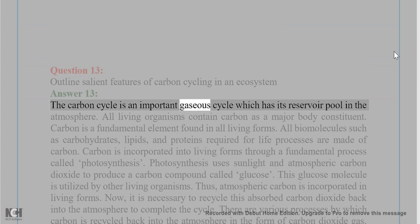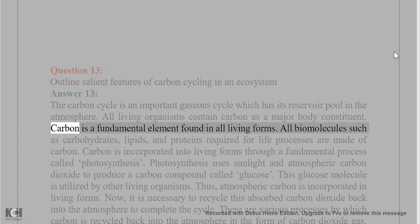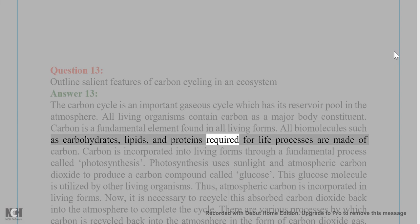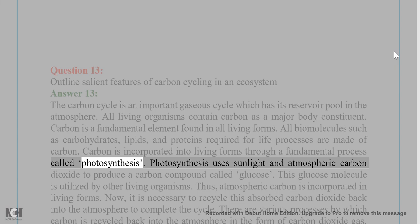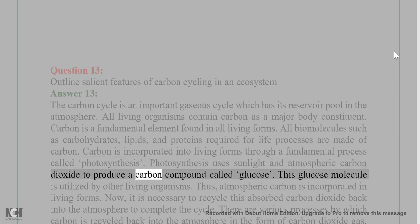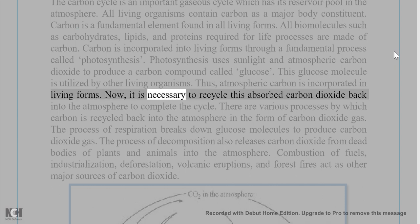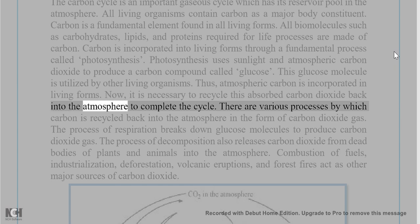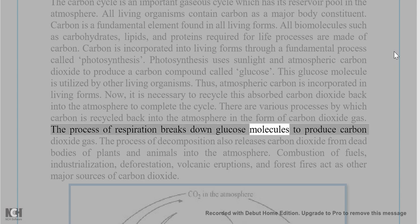The carbon cycle is an important gaseous cycle with its reservoir pool in the atmosphere. All living organisms contain carbon as a major body constituent. All biomolecules such as carbohydrates, lipids, and proteins required for life processes are made of carbon. Carbon is incorporated into living forms through photosynthesis, which uses sunlight and atmospheric CO₂ to produce glucose. This glucose is utilized by other living organisms. Various processes recycle carbon back into the atmosphere: respiration breaks down glucose to produce CO₂, and decomposition releases CO₂ from dead bodies of plants and animals.